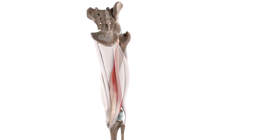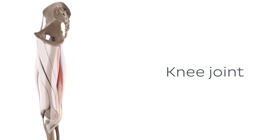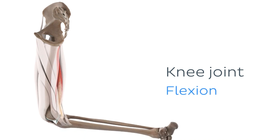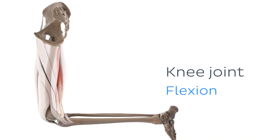The semimembranosus enacts two movements at the knee joint. Firstly, when the muscle contracts, it causes the flexion of the leg at the knee. As you can see here, the leg is being flexed as the muscle contracts. This is a movement that is made, for example, when walking, running, swimming and so on. The semimembranosus works in synergy with the other two posterior thigh muscles to flex the leg at the knee.